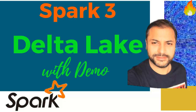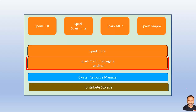Let's start. This is the component architecture of Spark. Primarily we have the Spark compute runtime engine at the core of this entire technology — the Spark runtime engine which helps in processing data over in-memory compute. On top of that we have a set of different APIs like Spark Core, available in different languages including Scala, PySpark, etc., and additional components like Spark SQL, Streaming, MLlib, and GraphX.